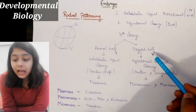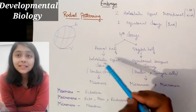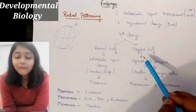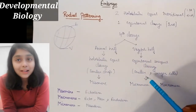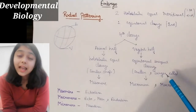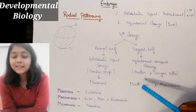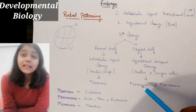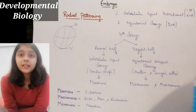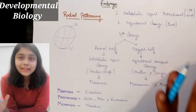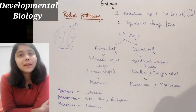But the vegetal half undergoes equatorial unequal cleavage. This is why some small cells and some larger cells are produced. The larger cells are called macromere cells and the smaller cells are called micromere cells. So here, three types of cells are produced: micromere, macromere, and mesomere.